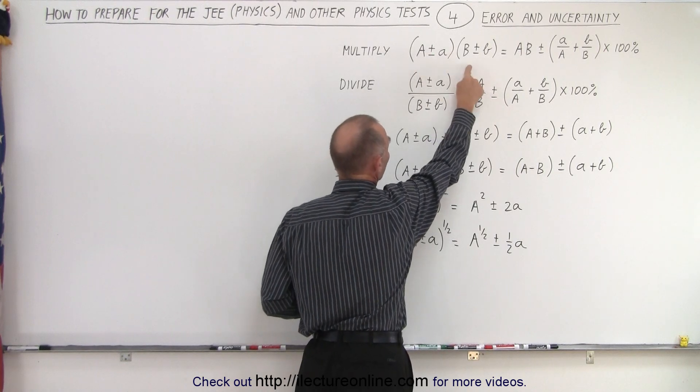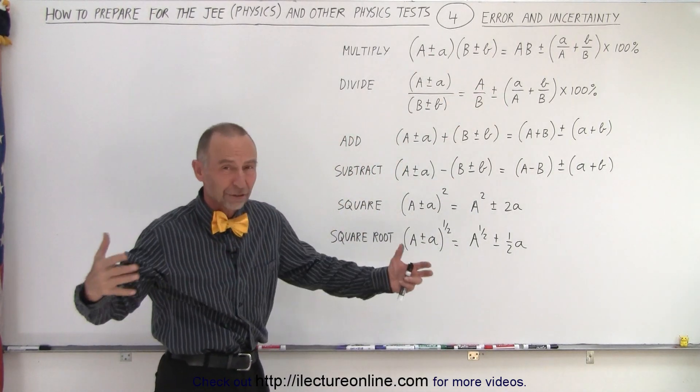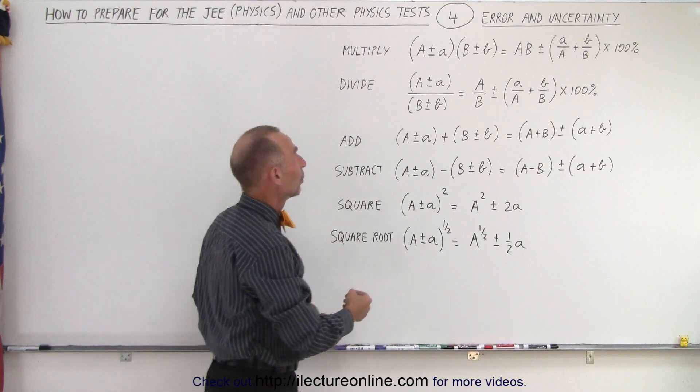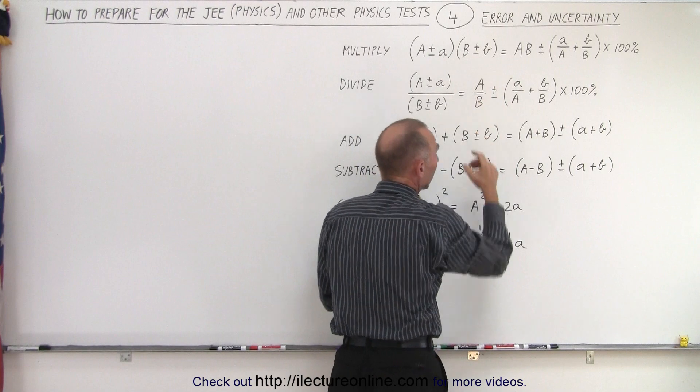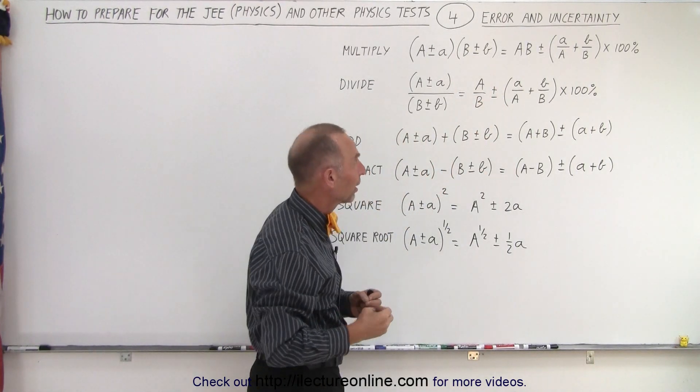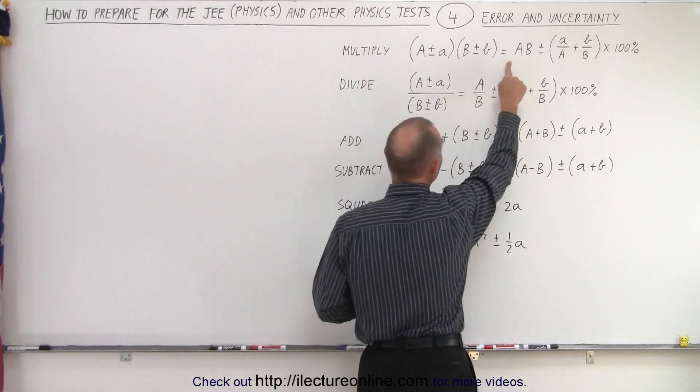Now if we have two numbers that we must multiply, such as the length and the width of an object, then we're going to do it as follows. A and B are the measured values, small a and small b are the uncertainties in that measurement.